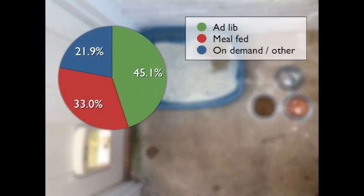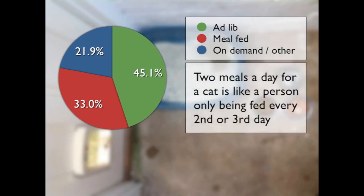Looking at feeding behaviour in a domestic setting: around 45% of cats in the UK are fed ad-lib, with free access to food whenever they want. But more than 50% are fed meals — typically a couple of meals a day — or fed on demand, which is problematic if the owner is not always present. Two meals a day for a cat is comparable to a person being fed only every second or third day, remembering that in the wild cats would normally eat 10 to 20 small meals a day. This means cats will over-consume in the morning and evening and then have limited access to food, when their normal behaviour would be to snack throughout the day while mixing other activities like hunting and territorialising.